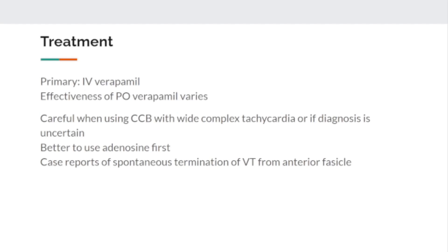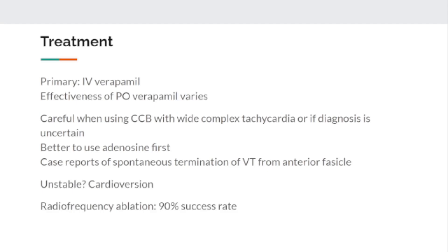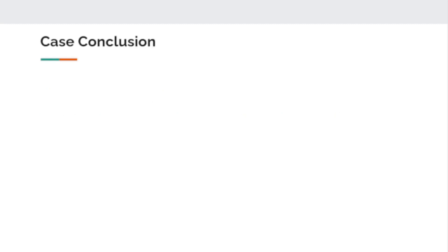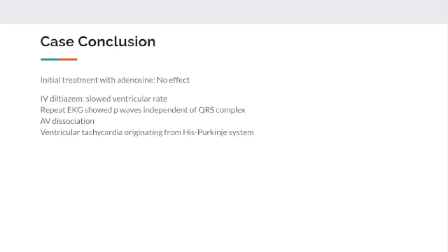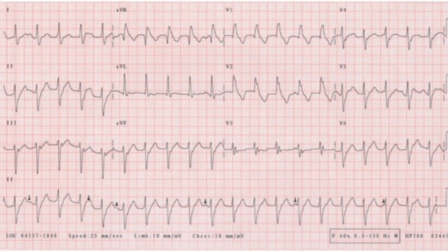Treatment is IV verapamil; PO verapamil is not as effective. However, caution is advised on initial presentation when using a calcium channel blocker if you're not sure what's going on — better to start with adenosine. There are case reports of adenosine terminating tachycardia from the anterior fascicle. If the patient is unstable, you need to cardiovert. Our patient was given adenosine — nothing happened — then IV diltiazem, which slowed the ventricular rate. On that EKG you can see she's slowed down, and P waves are now visible but essentially dissociated from the QRS complex.